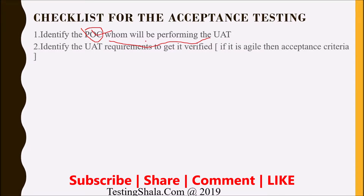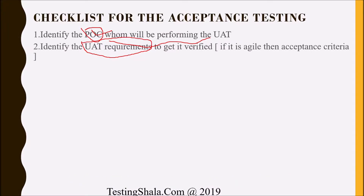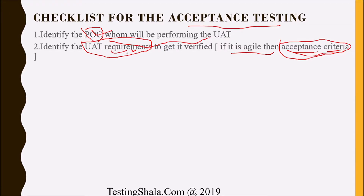The second item to validate as part of the checklist is UAT requirements — against what requirement you will be testing the application. If you are using Agile, for every user story there will be a clear definition of acceptance criteria. You can refer to that to validate what needs to be checked. If everything mentioned in the acceptance criteria is working, then the user acceptance testing will pass.